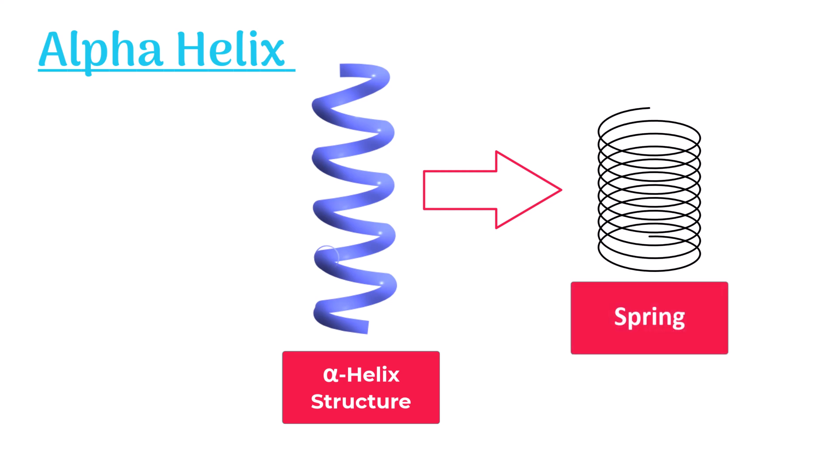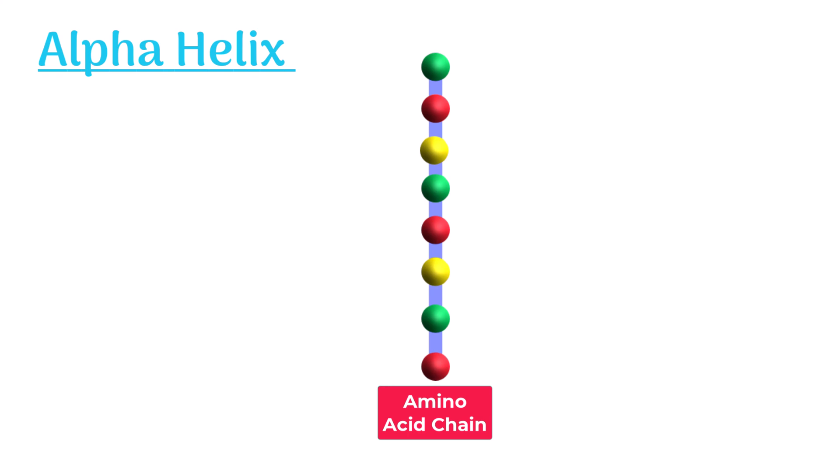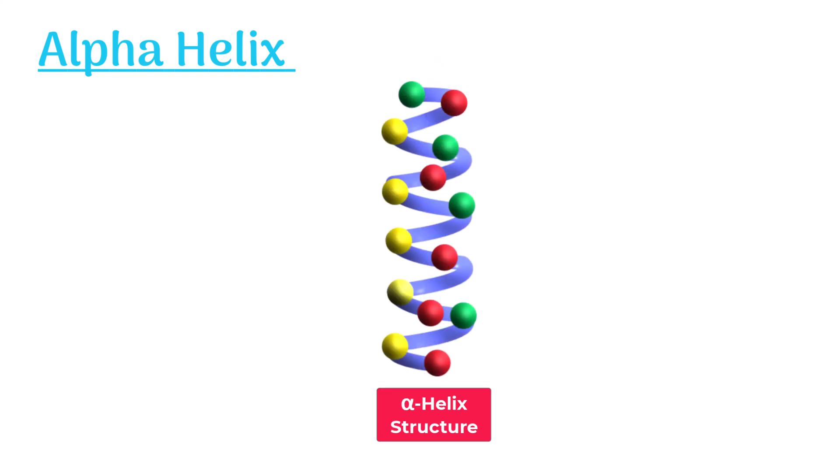It is formed when a chain of amino acids twists and coils around itself. Remember, this coiling is not spontaneous. It forms because of hydrogen bonds between amino acids. These hydrogen bonds hold this helix structure together and stabilize it.